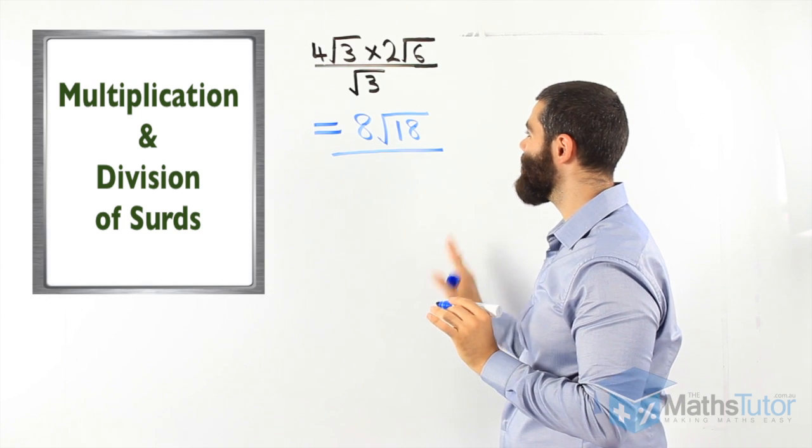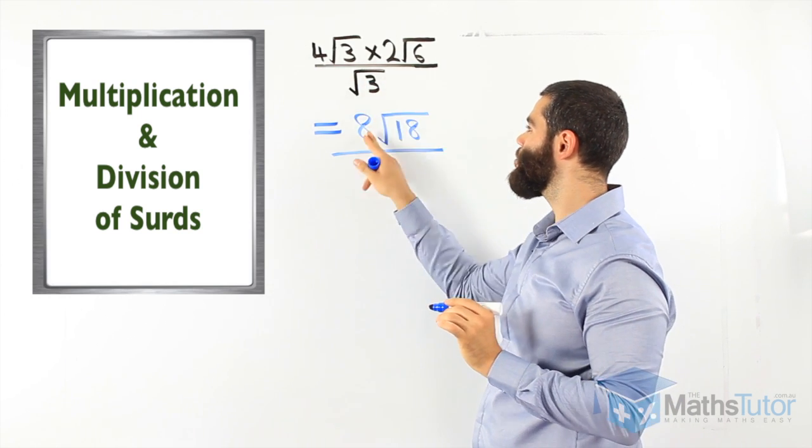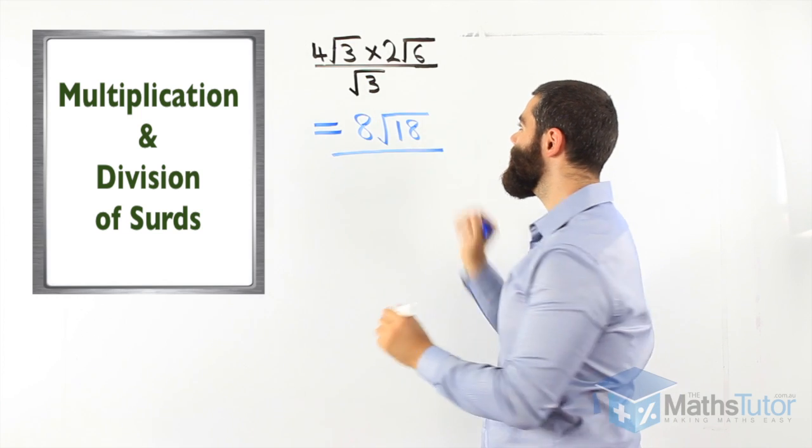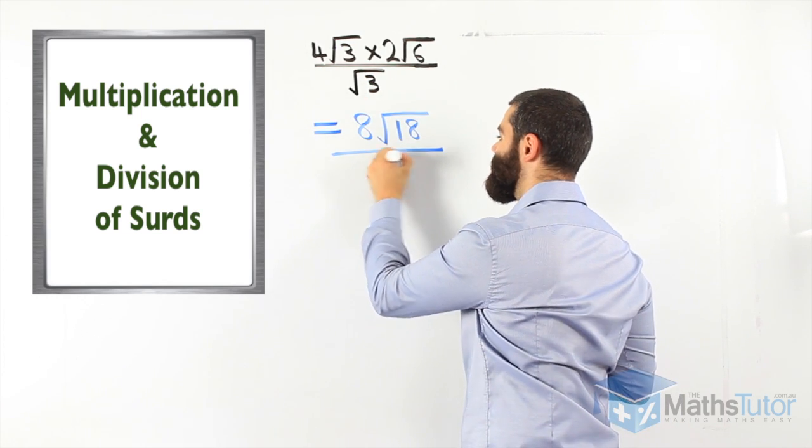Now this is, so far, what we have completed. 4 times 2 is 8, 3 times 6 is 18. We've completed now the numerator. We're going to divide by root 3, if we can.